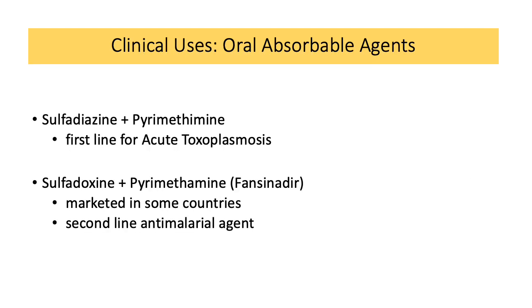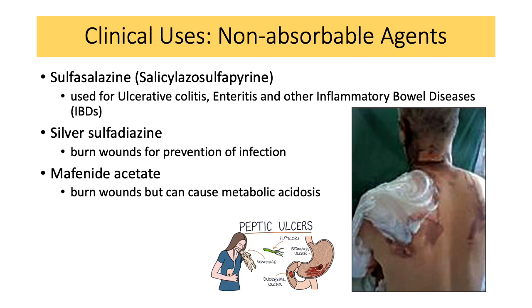For clinical uses of oral absorbable agents: sulfadiazine is usually combined with pyrimethamine as a first-line agent for acute toxoplasmosis. Sulfadoxine plus pyrimethamine, marketed as Fansidar, is only available in some countries and is a second-line anti-malarial drug.